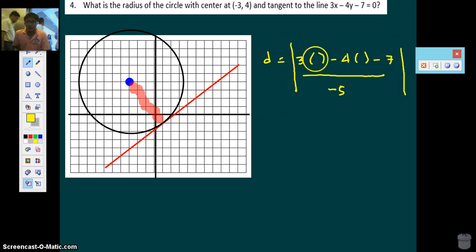This is negative 3. This is 4. Negative 3, negative 9, minus 16, minus 7. The radius is negative 9 minus 16, negative 25, minus 7. That's negative 32 over negative 5. Absolute value. The radius is 32 over 5. So that's it. Units.